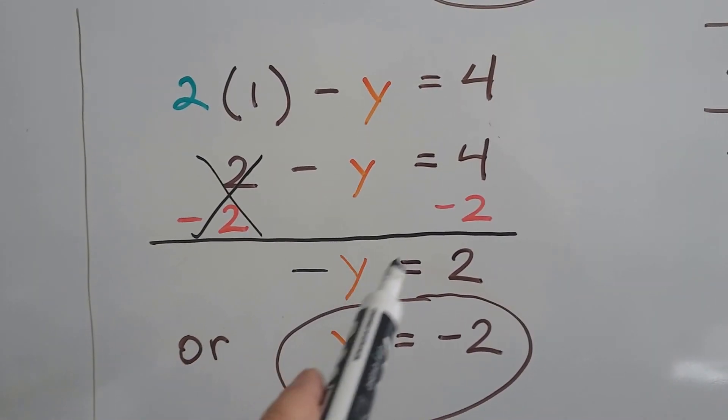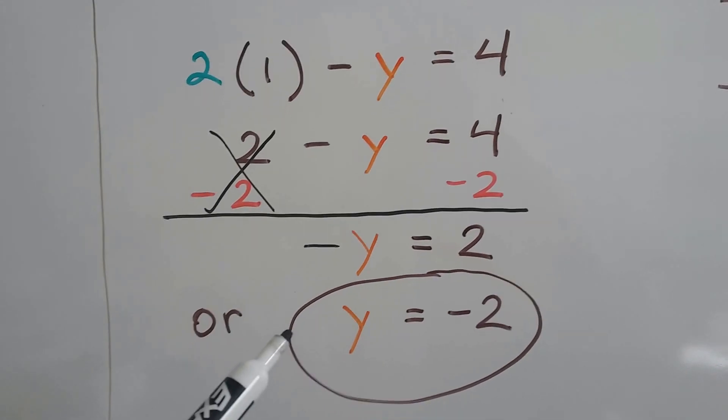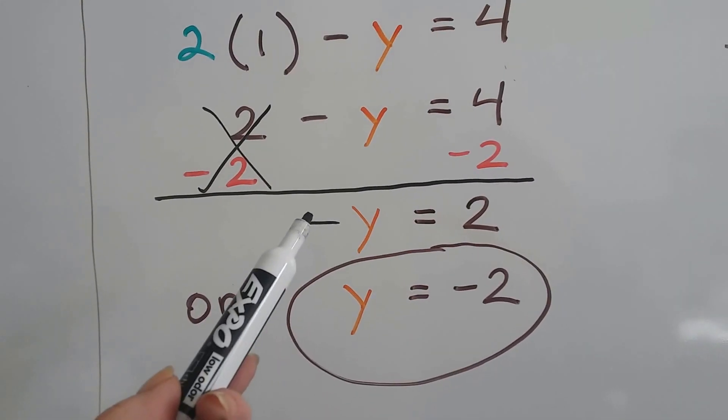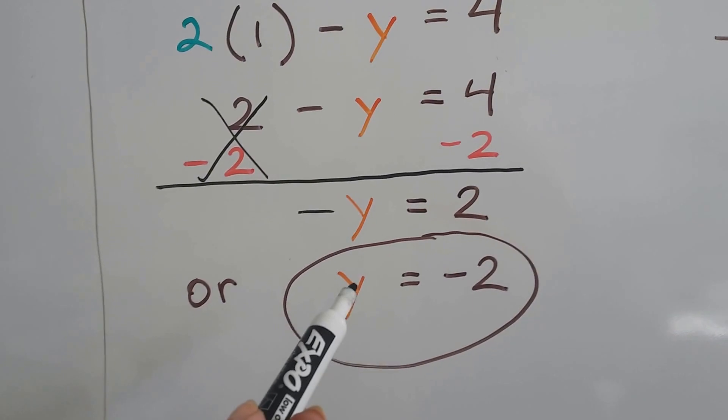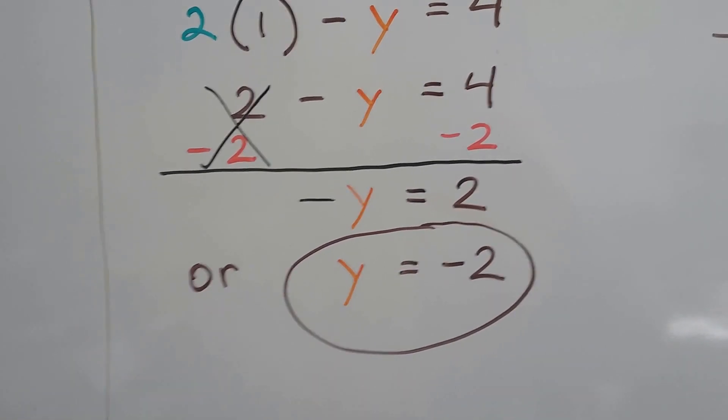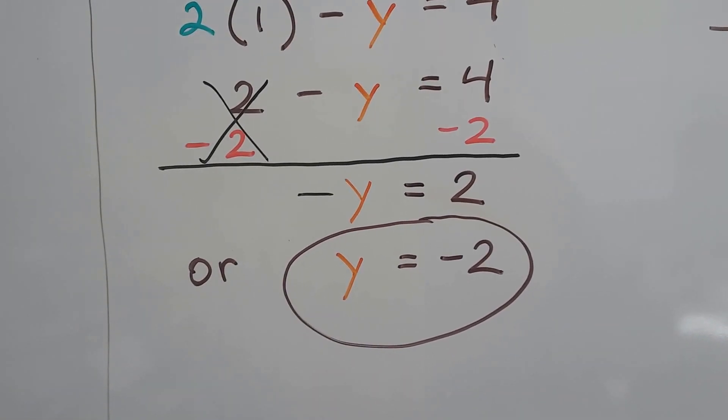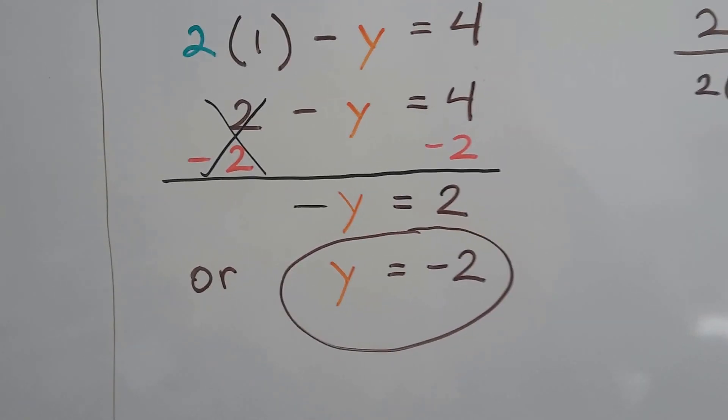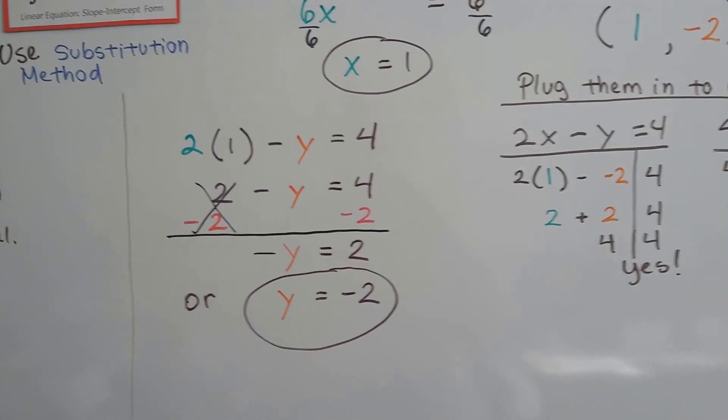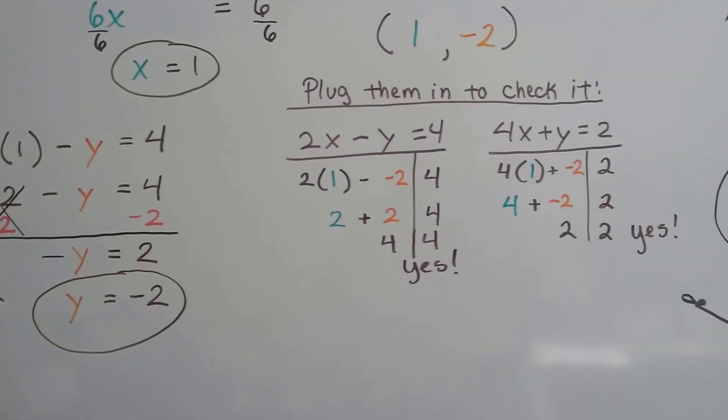Now we have -y = 2. Now when you see this, all you have to do is put this negative sign on this side. So now really we have y = -2. I just flipped it over like that. Now we know that x is 1 and y is -2. We plug them in to check it.